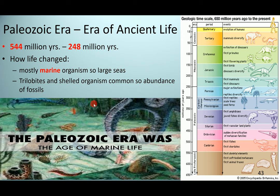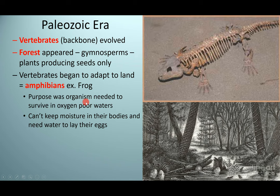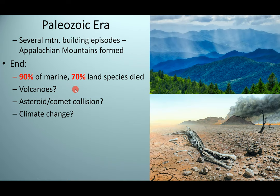We can see fossil remains of these marine organisms from the Paleozoic era. During this time, we saw the evolution of vertebrates — organisms with backbones. Forests started to appear with gymnosperms, which are plants that produce seeds but no flowers yet. Vertebrates began adapting to land, which is how we got amphibians and frogs — marine organisms moving onto land and evolving.